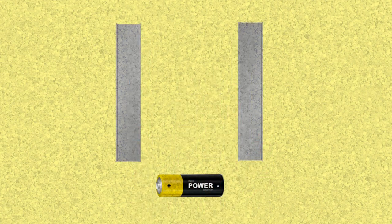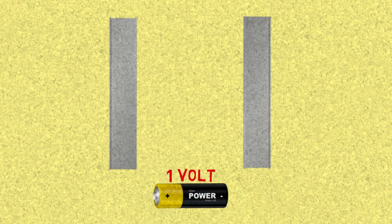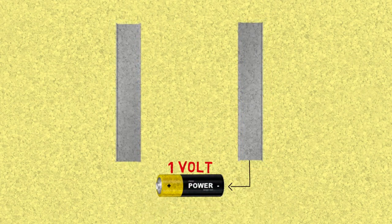Imagine having two plates in a vacuum in this configuration. One of them is connected to a one-volt battery's negative side and the other one is connected to the positive side.